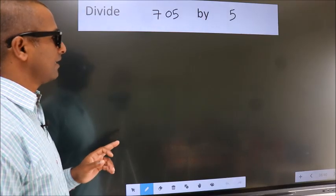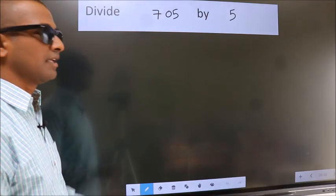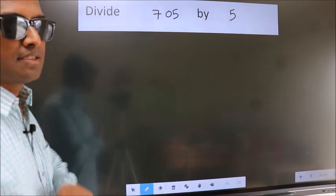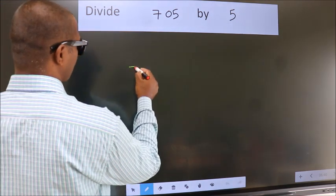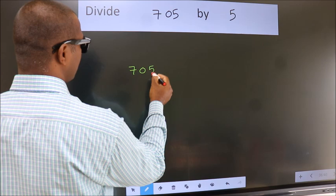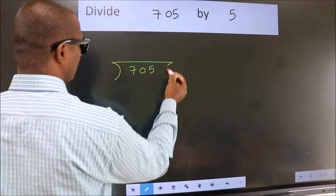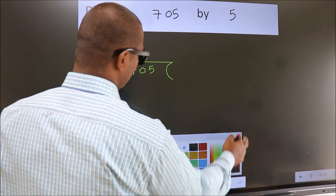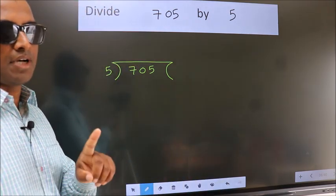Divide 705 by 5. To do this division, we should frame it in this way. 705 here, 5 here. This is your step 1.